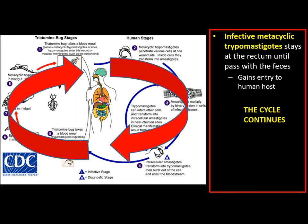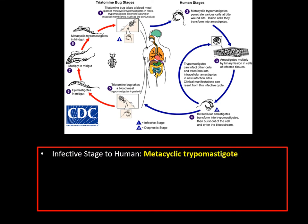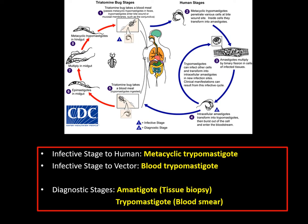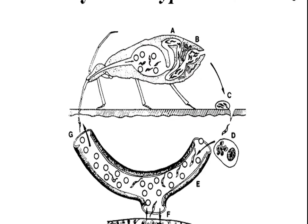In summary of this life cycle: metacyclic trypomastigote is the infective stage to humans, blood trypomastigote is the infective stage to the vector, and amastigote and trypomastigote are the diagnostic stages found in tissue biopsy and blood smear, respectively. This picture shows how the triatomine bug bites and defecates and how Trypanosoma cruzi gains entry to the human host.